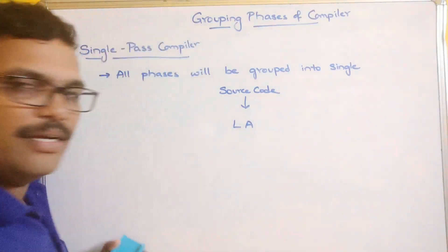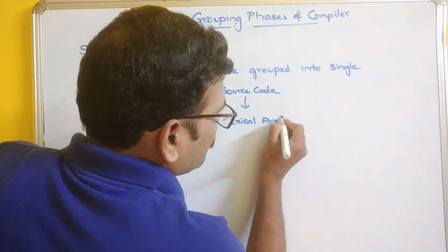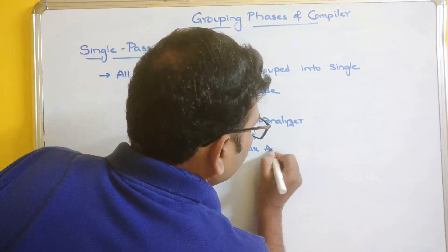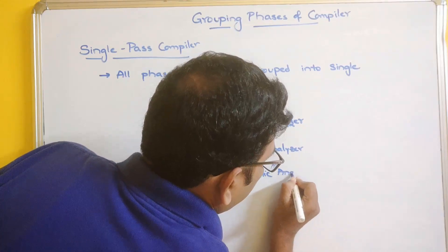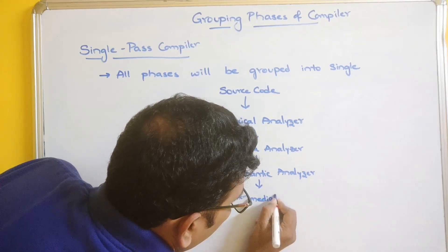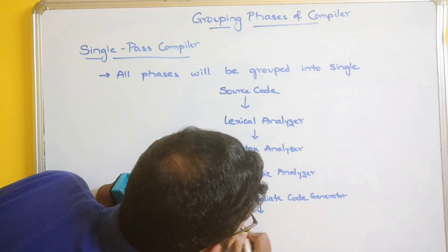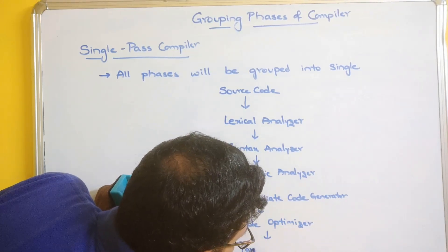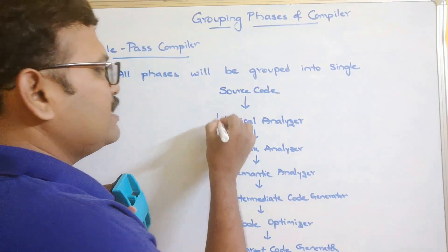The source code is first given to the lexical analyzer, from there it goes to the syntax analyzer, then to the semantic analyzer, then to the intermediate code generator, then to the code optimizer, and finally to the target code generator. These are the different phases involved.